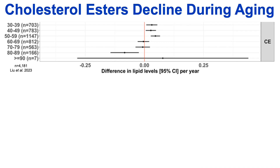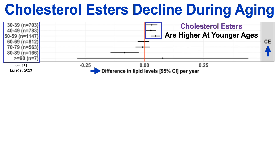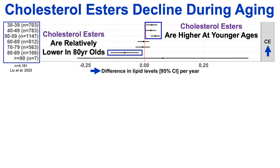First, let's look at age-related changes. On the x-axis we have the difference in lipid levels (cholesterol esters, or CE) per year, and on the y-axis an age range from 30 to older than 90. Cholesterol esters are relatively high at younger ages — at least in the 30 to 59 age range — and comparatively lower in 80 to 89 year olds. This study included about 4,200 people from 30 to 89 years old.